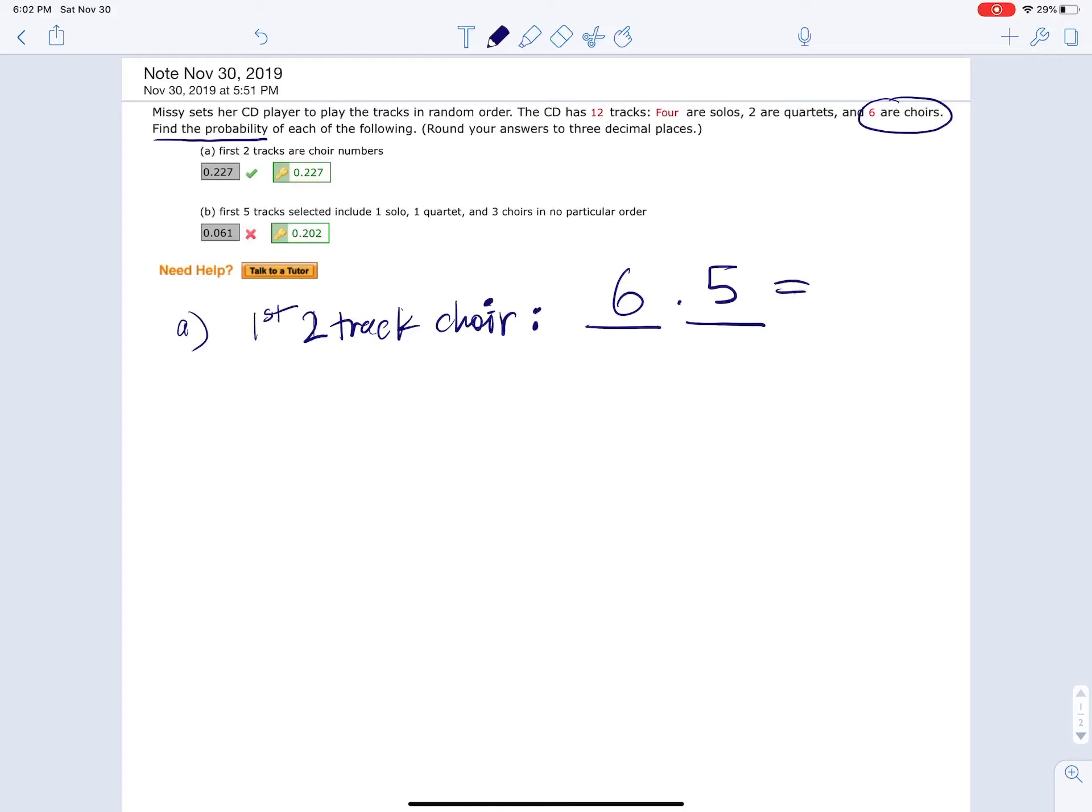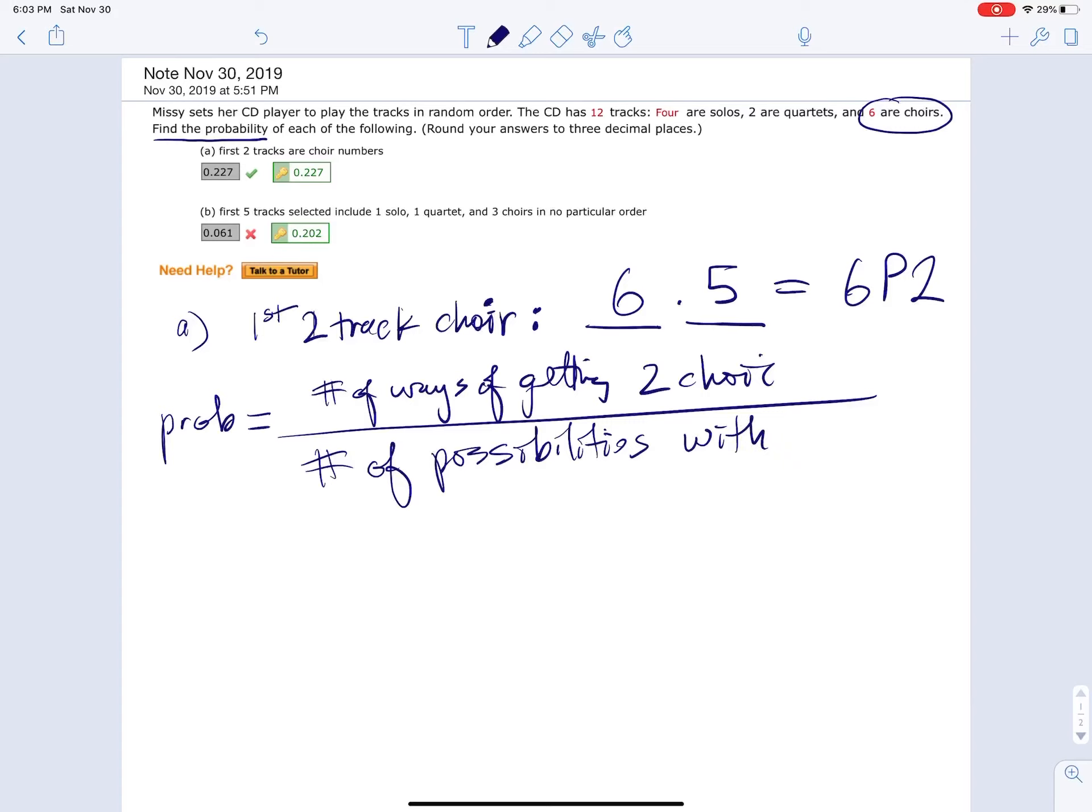Which happens to be 6P2. Now since this is a probability, that's the numerator. So the probability is going to be equal to the number of ways of getting two choir divided by the number of possibilities with no restrictions.